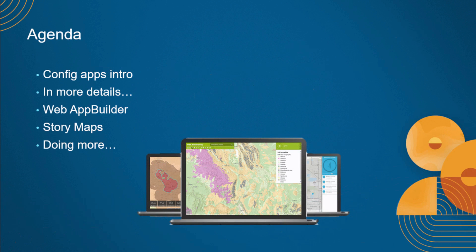What we're going to cover this morning is we'll start from the ground up with a little intro to Configurable Apps, then go into more details. Ian's going to cover some of the really cool things you can do with those. We'll do a quick brush on Web App Builder, I'll cover story maps, and then we'll cover working with the source code, embedding, and things like that. Configurable Apps are an interesting area at Esri — they cover a broad range of topics, from JavaScript Configurable Apps to Web App Builder and story maps. Each is unique and does things in slightly different ways.